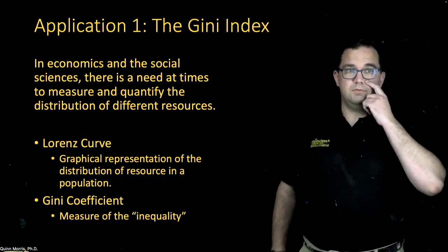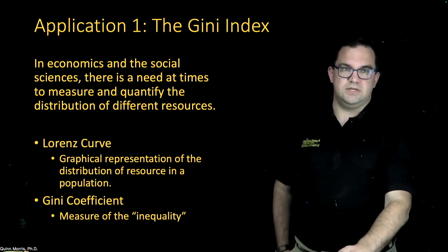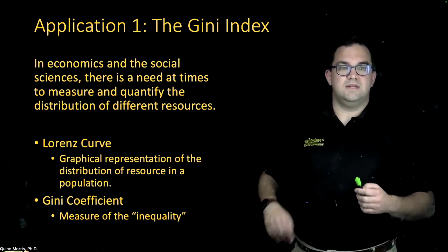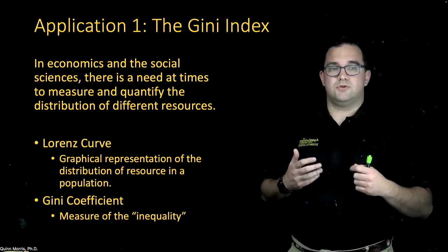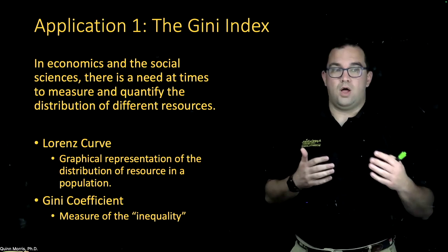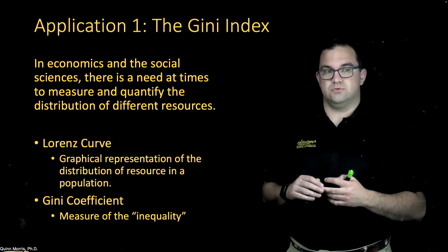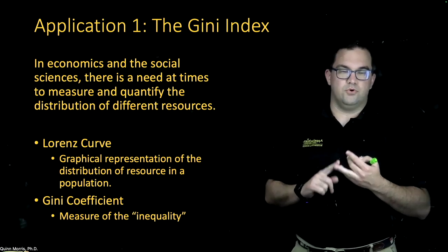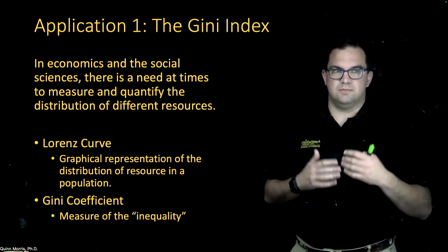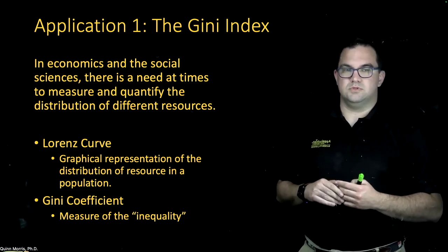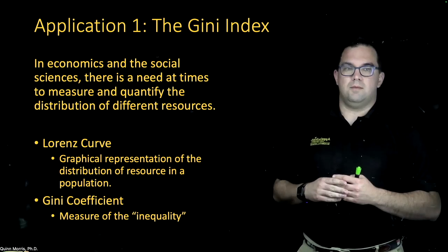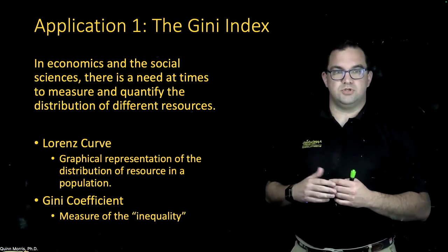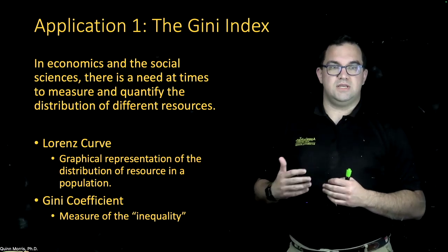For our first application, I want to talk about something called the Gini Index or the Gini Coefficient. In economics and the social sciences, there's a need at times to measure and quantify the distribution of different resources — in particular, to try and quantify whether or not there is inequality in that distribution, whether those resources are money, physical resources like access to food or water, and lots of other things. We'll see some particular uses of this Gini Index towards the end of this section. One way to start thinking about this is something called the Lorenz Curve, which is a graphical representation of the distribution of a resource in a population.